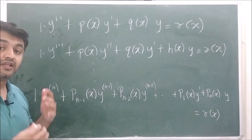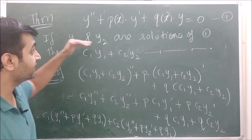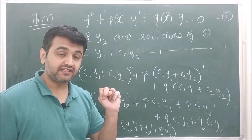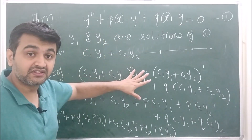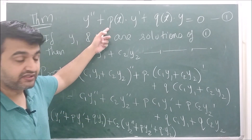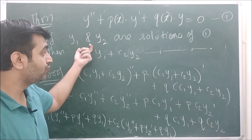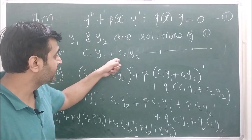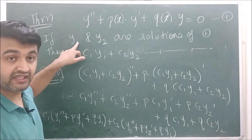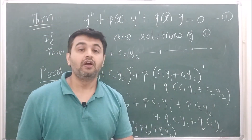Now let's jump to the superposition principle, also called the linearity principle. It states: if you have a second order linear and homogeneous differential equation — both conditions are important, and if either is violated the theorem is not true — and if y1 and y2 are any two solutions, then any linear combination c1·y1 + c2·y2, where c1 and c2 are constants, is also a solution.